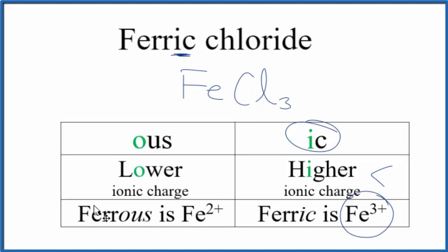If we had ferrous chloride, it'd be Fe2 plus, and we'd only need 2 chlorine atoms. We'd have FeCl2.